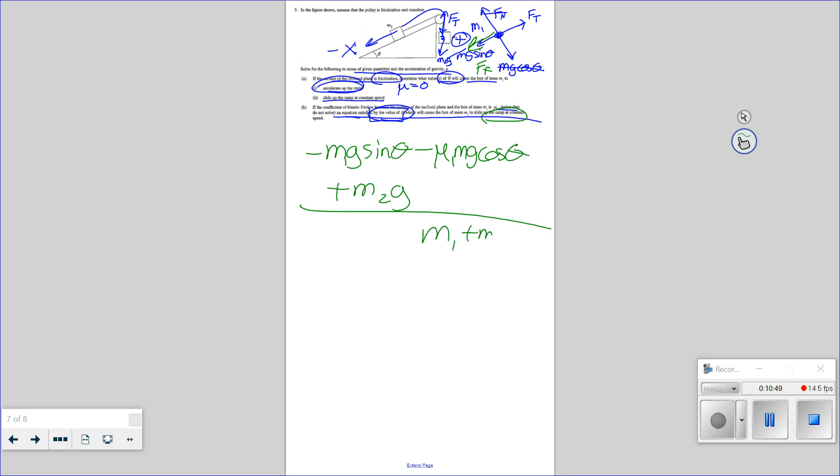Okay. And we have constant speed. And so it all equals zero. Okay. So I really don't need that m1, m2. Every term has a g. So that's going to cancel out. So zero equals m1 sine theta minus mu m1 cosine theta. And then, oh, those are both negative. Plus m2. And that's it. Okay.